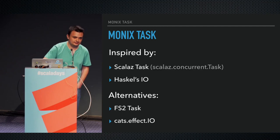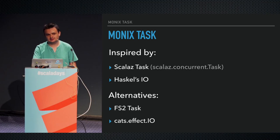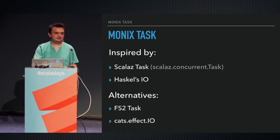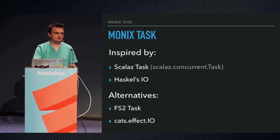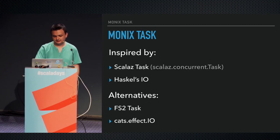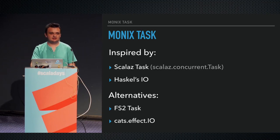Monix stands on the shoulders of giants. It was inspired by the ScalaZ task implementation and by Haskell's IO. It also has alternatives in the type-level ecosystem such as FS2 task and the new cats-effect IO project. I'm also involved in that. Monix's task comes with certain advantages, as you'll see.